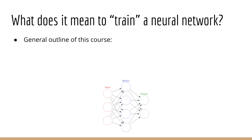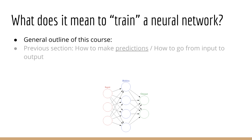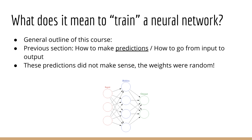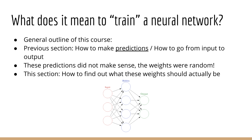The previous section of this course taught you how to make a prediction using a neural network — given some input, how do you find the neural network's output? Of course, we discovered that those predictions didn't make any sense because the weights of the neural network were just random. In this lecture, we are going to answer the question: how do we find what these weights should actually be?